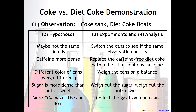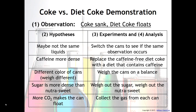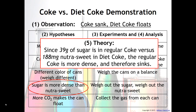I included both the experiments and the analysis together because you really need to make sense of the experimental results. We saw that when we weighed out the sugar and the NutraSweet, sugar is in fact more dense than NutraSweet. Because of that, 39 grams of sugar is in regular Coke versus 188 milligrams of NutraSweet in Diet Coke. Therefore we can conclude that regular Coke is more dense and therefore sinks.